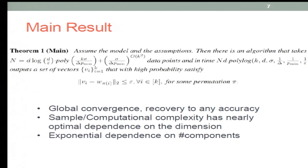Here comes the main result. Under those assumptions, if you take k, sigma, delta, and the probability of each component to be constant, you basically get nearly linear dependence on dimension for sample complexity, which is nearly optimal. Your time complexity is also nearly optimal, because at least you need to see all the data. It achieves global convergence and the dependence on epsilon is only logarithmic. It has exponential dependence on number of components, but this is unavoidable in many mixture models.